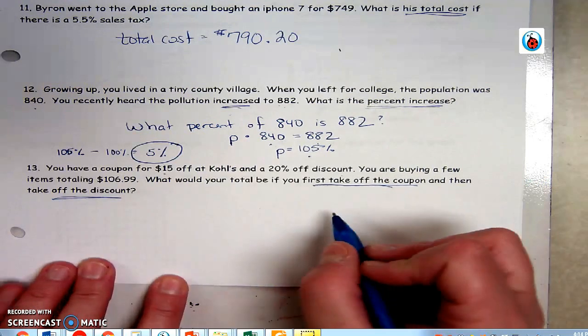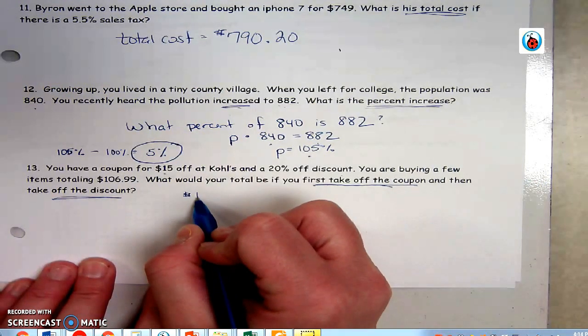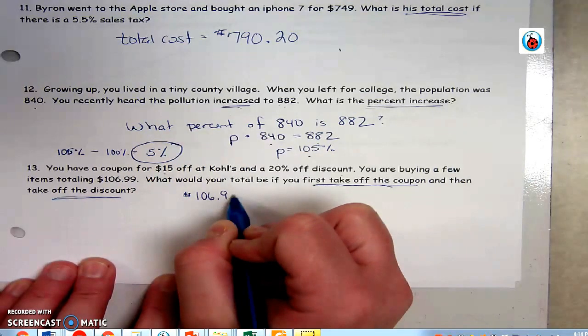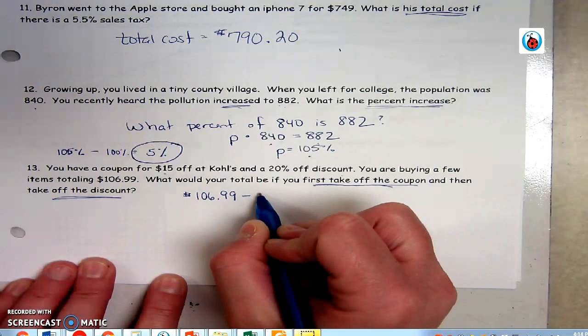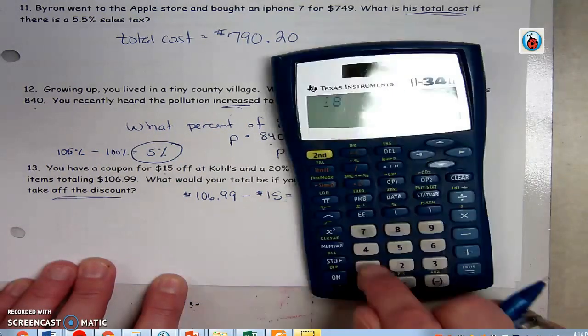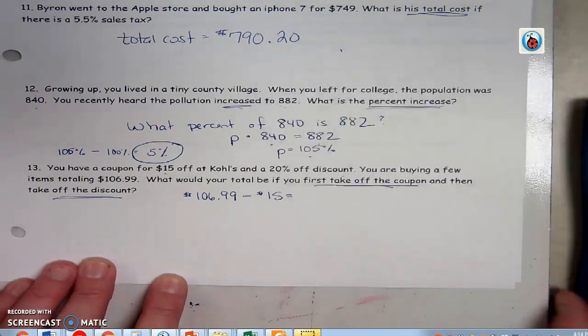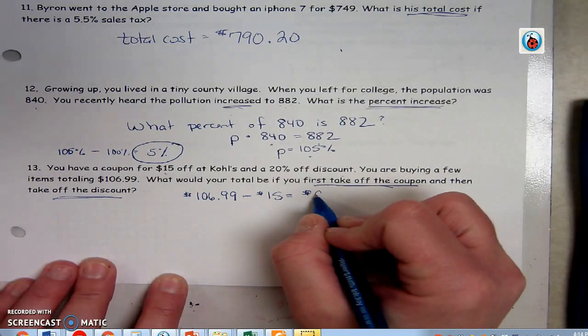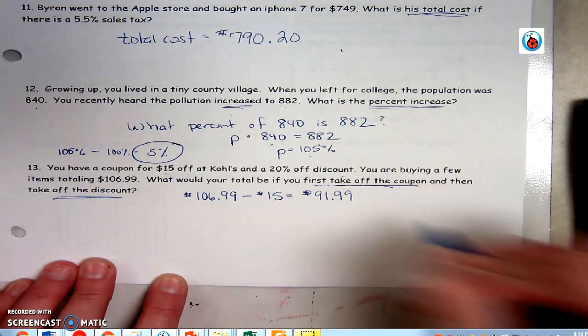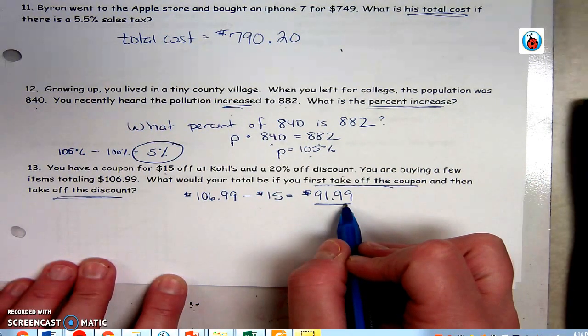All right. So the first thing I have to do is take off the coupon. So I have to do $106.99 and subtract the $15 coupon. I use a calculator for that, 106.99 minus 15, and I get $91.99. So that's the new price after the coupon is taken.